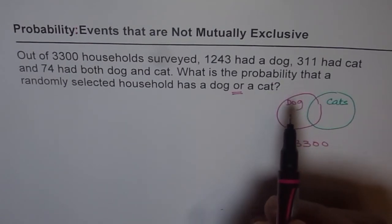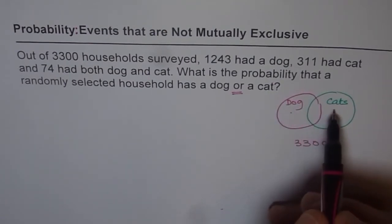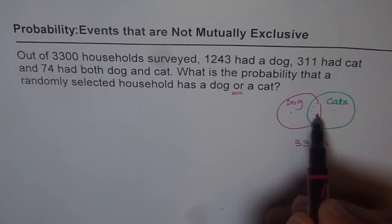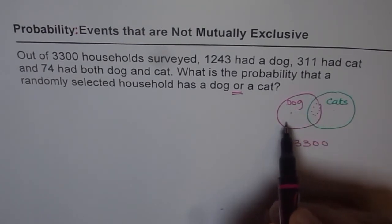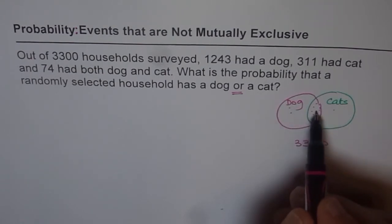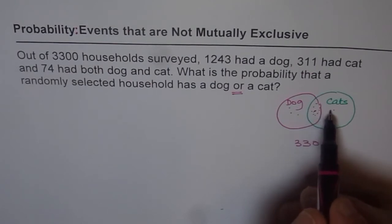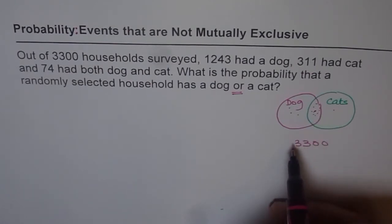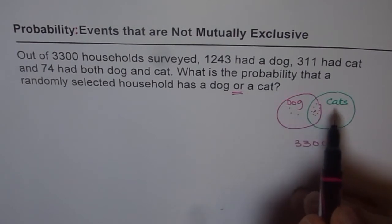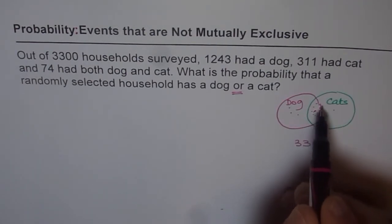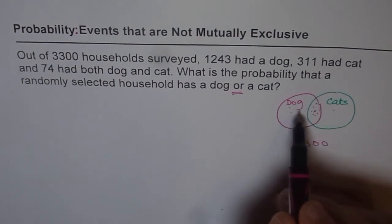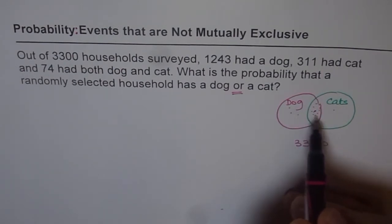Now you will see, when you are talking about households having dogs or cat, then there are some which have both. Now, when you are talking about probability of dogs or cat, the ones which are both, they get added twice. So when we are talking about probability of dogs or cat, and we add their individual probabilities, we are adding the common,